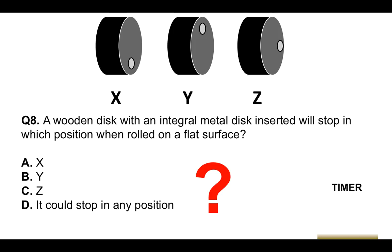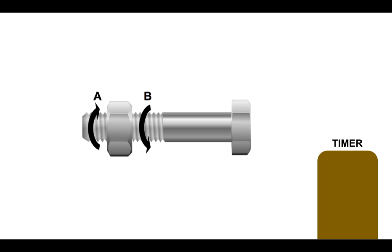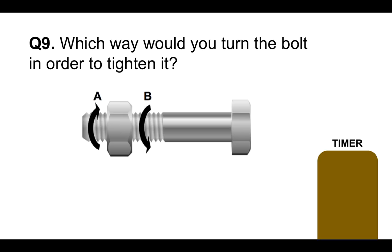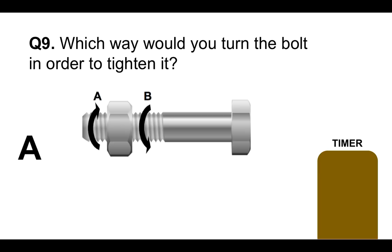These are real common questions, so you're obviously learning a lot as you go along. If you enjoy the video, please give it a thumbs up. Question nine: which way would you turn the bolt in order to tighten it? First, we have to know which is the nut and which is the bolt — that's the nut and that is the bolt. So which way do we turn the bolt to tighten it? Is it A or B? Put your answer in the comments section below for marking.